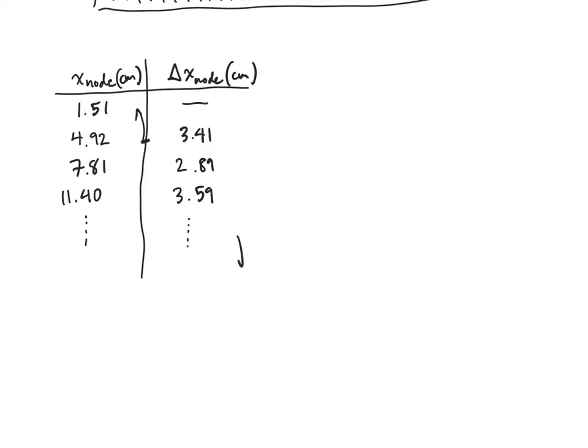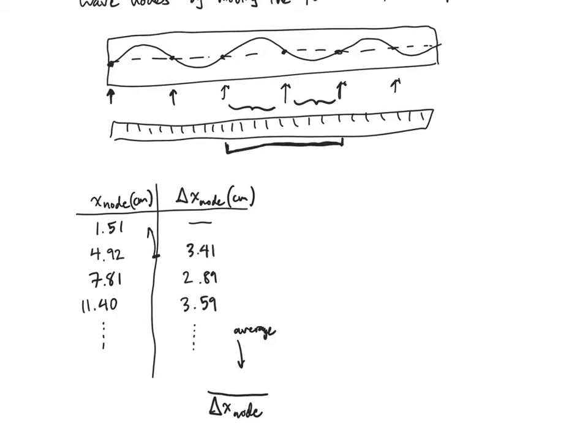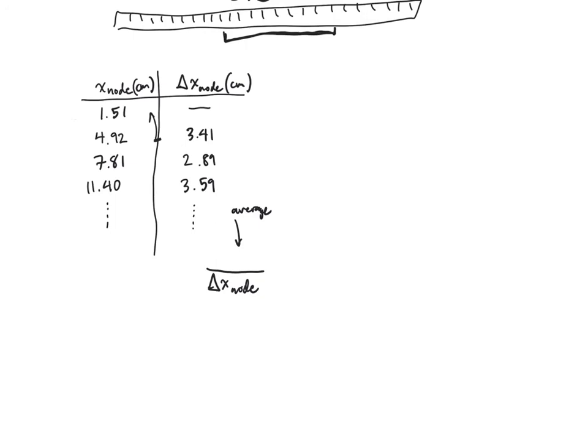We're going to calculate the average of all of these, and we can call that delta x node average, or the average is the line over the variable like that. That corresponds to the average distance between any two of these nodes here. Hopefully you recognize that for every wavelength we have two of those spans, so therefore we can say that our wavelength, which is typically represented with the symbol lambda, Greek letter lambda, equals two times delta x node average.